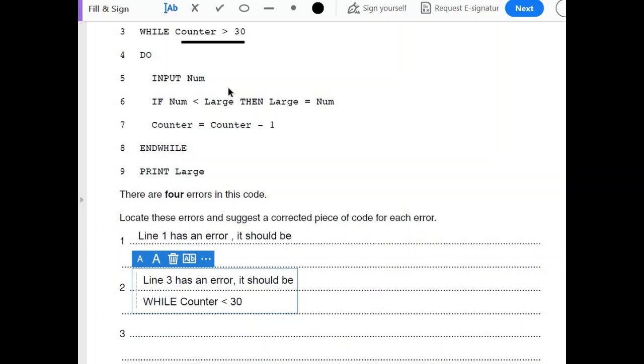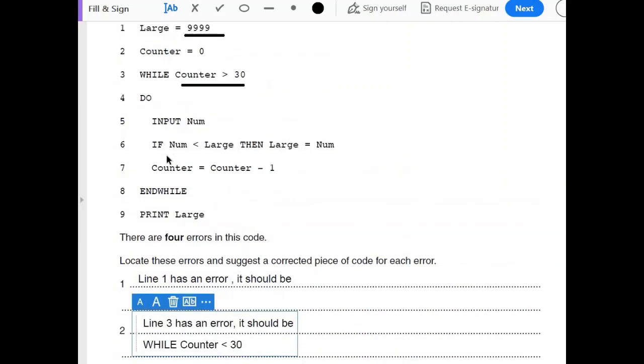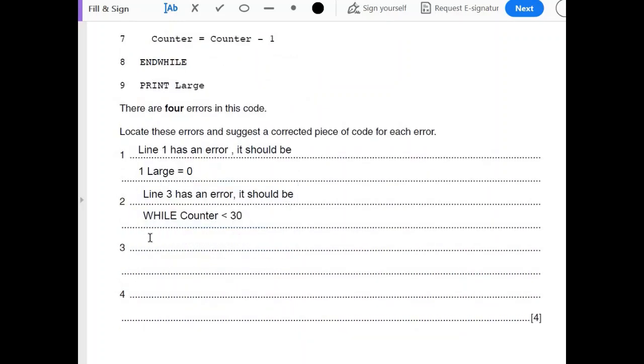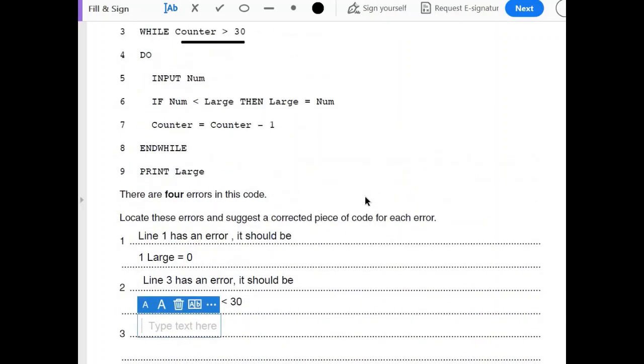DO INPUT num. Okay, that is fine. IF num is less than large, THEN large equals num. No, that is wrong. We do not want small numbers, we want larger numbers, so it should be as we have seen in the lecture about standard methods of solution, how to calculate a maximum. It should be IF num is greater than large.